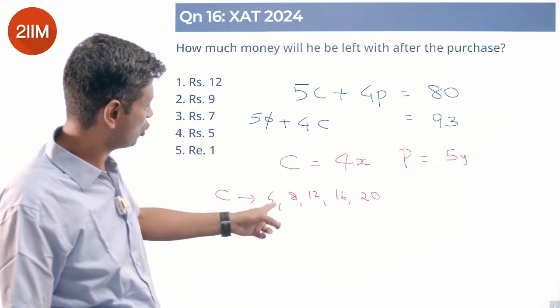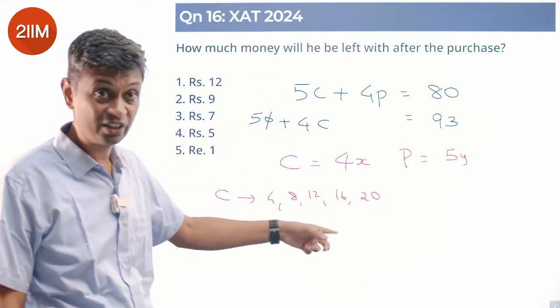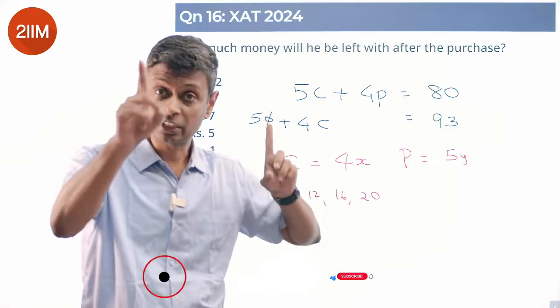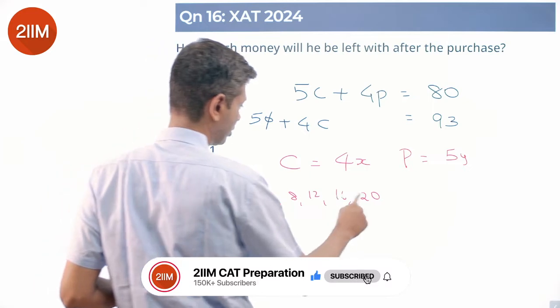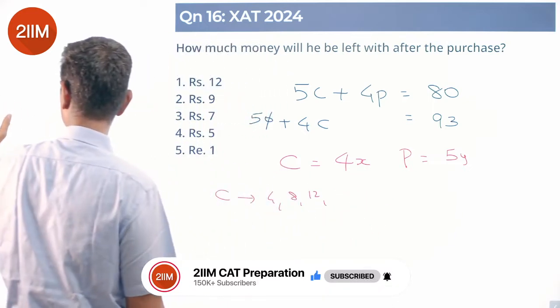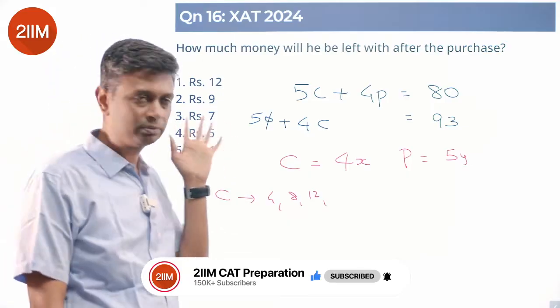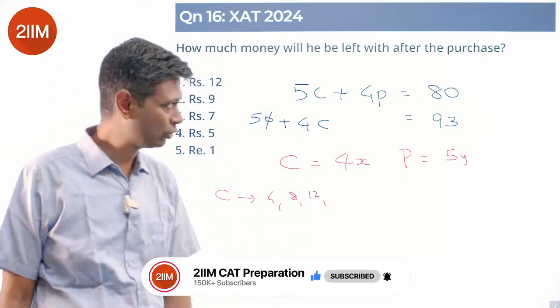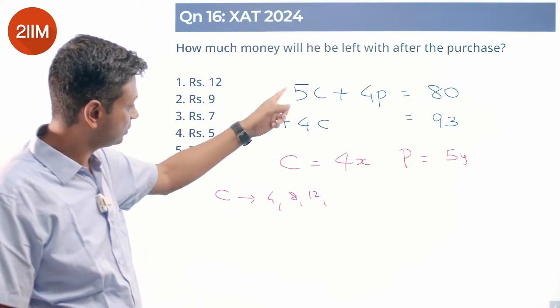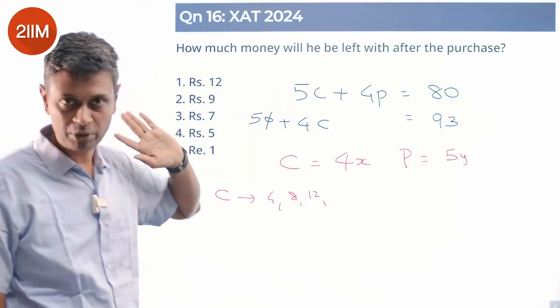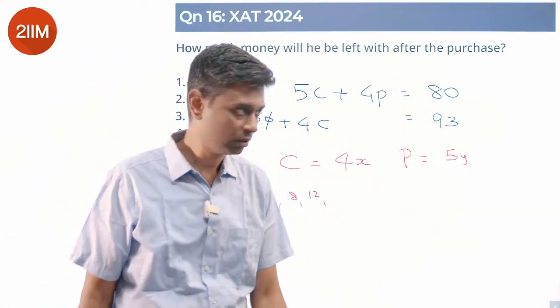Except 5 into 4 is 20, 5 into 8 is 40, 5 into 12 is 60, 5 into 16 is 80—already there, he's buying at least one. So all of these are not possible. The cost per kilogram of cabbage is 4, 8, or 12. Nothing else is possible. And so 5 times C could be 20, 40, or 60 being spent on this. The remaining being spent on potatoes, that will work for sure. We need to check this.